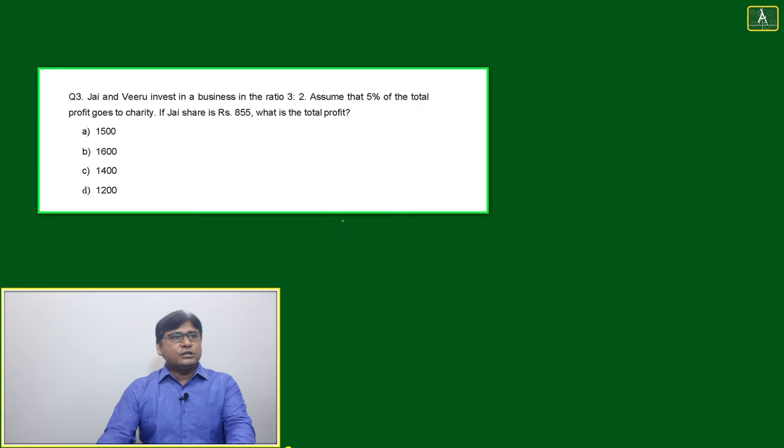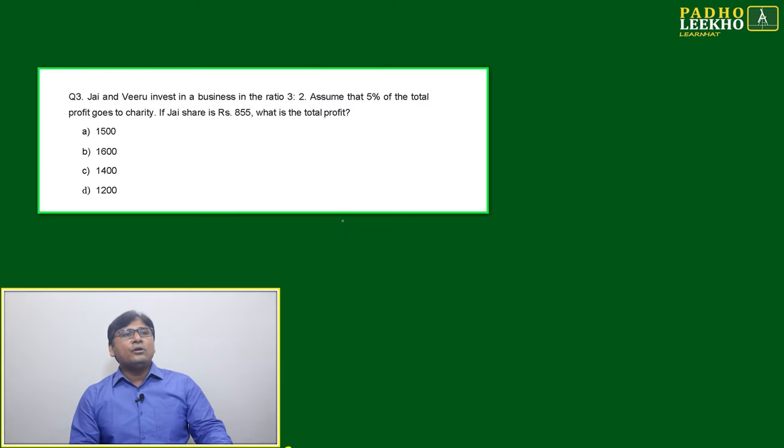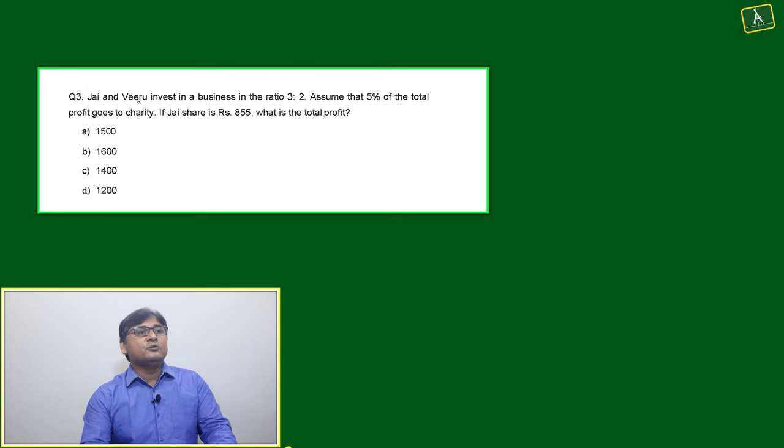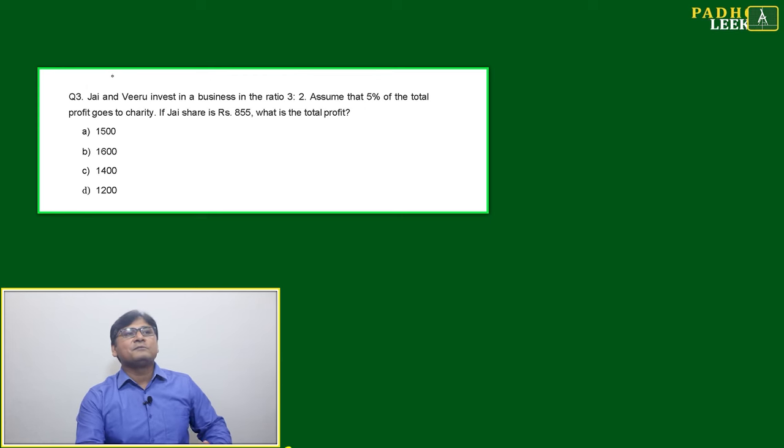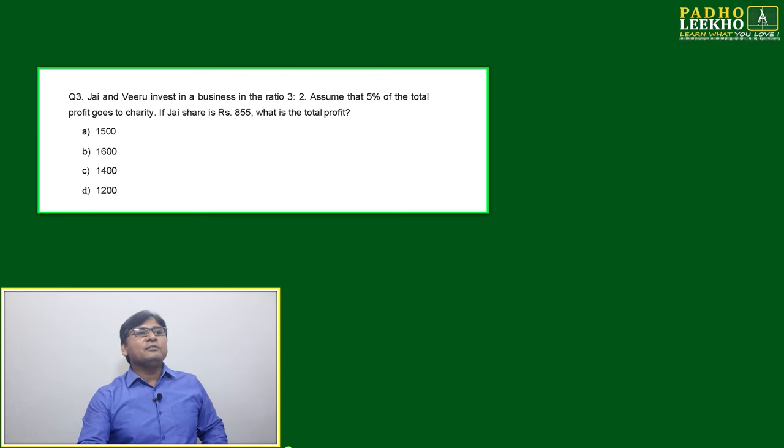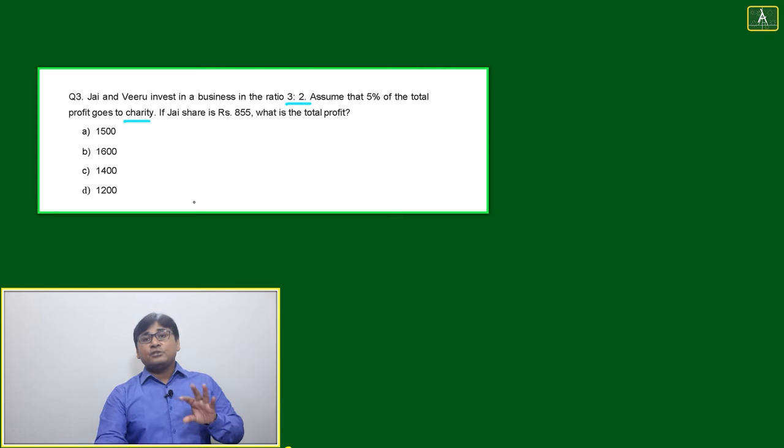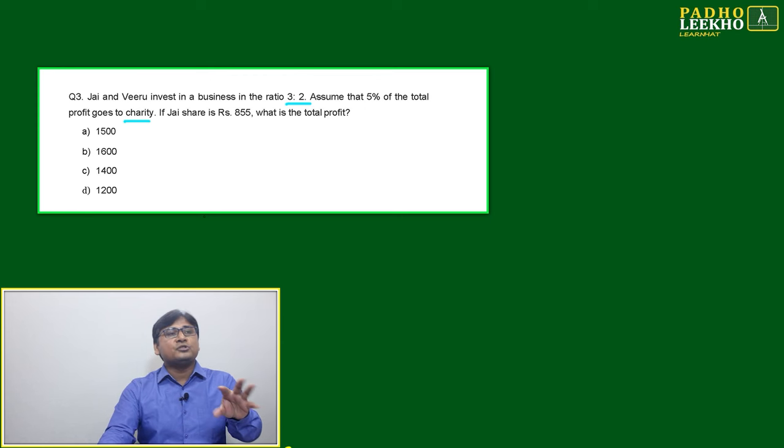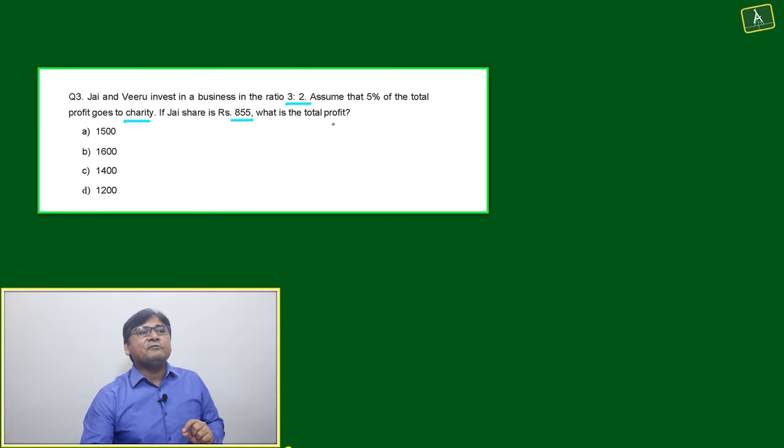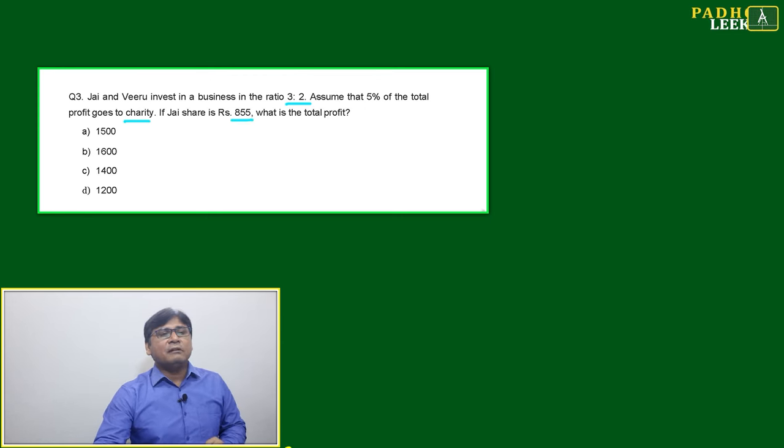Now we'll come to the next question, question number three, which is also based on partnership. Jay and Biru, very famous characters from the famous film Sholay, invest in a business in the ratio of 3:2. Assume that 5% of total profit goes to charity. If Jay's share is 855, then what will be the total profit?